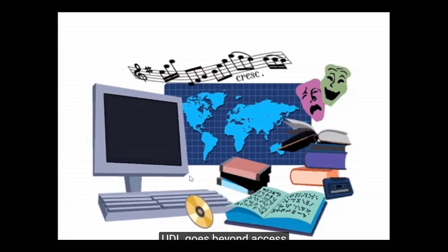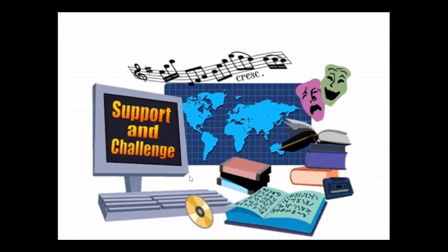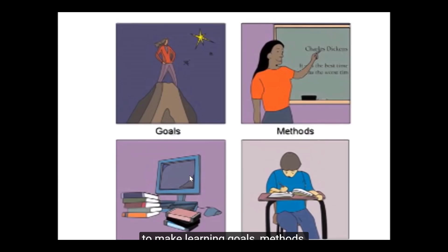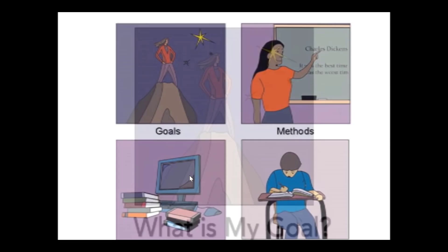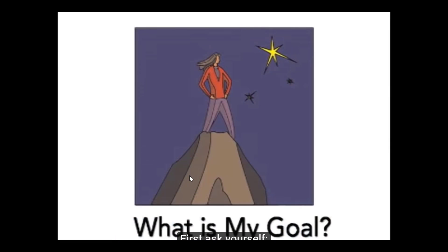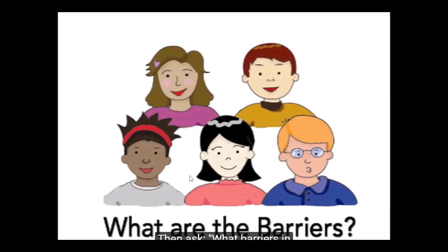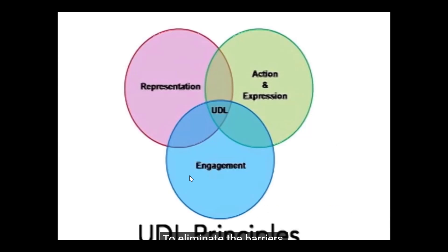UDL takes this idea and applies it to the design of flexible curriculum. UDL goes beyond access because we need to build in support and challenge. To use the UDL framework, first ask yourself: what is my goal? What do I want my students to know, do, and care about? Then ask: what barriers in the classroom might interfere with my diverse students reaching these goals? To eliminate barriers, use the three UDL principles to create flexible paths to learning so that each student can progress.